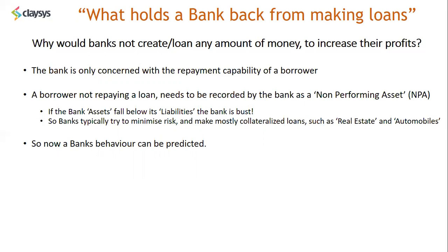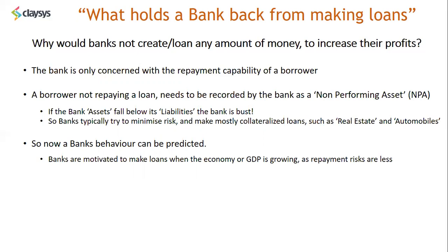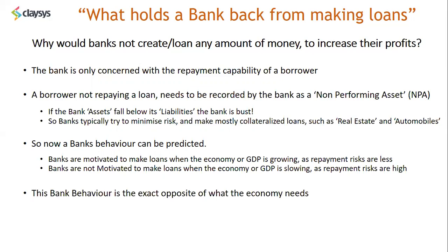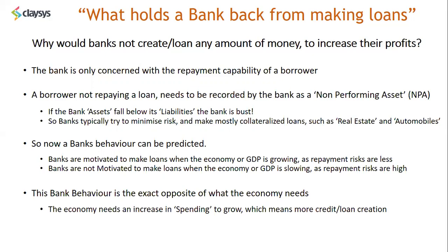We can almost predict the behavior of banks. Banks are motivated to make loans when the economy or GDP is growing, as repayment risks are less — because when the economy is growing, income is growing and the risks of non-payment are significantly less. On the other hand, banks are not motivated to make loans when the economy or GDP is slowing, as repayment risks are high. This bank behavior is the exact opposite of what the economy needs — the economy needs more credit creation to boost spending, but the psychology within the current banking system doesn't align with this requirement.